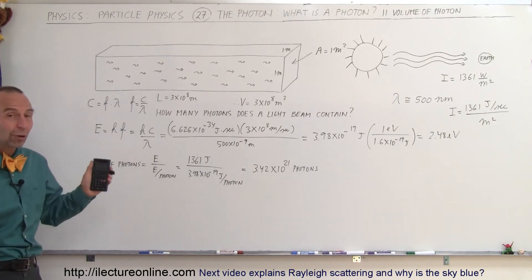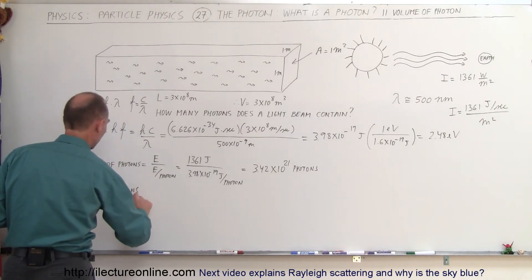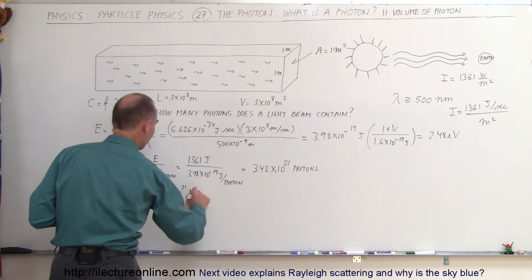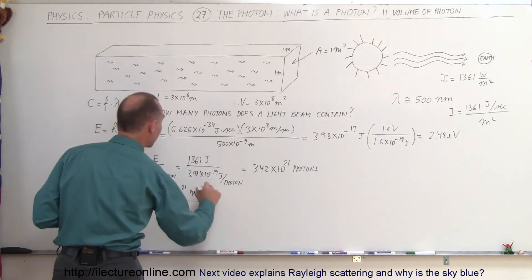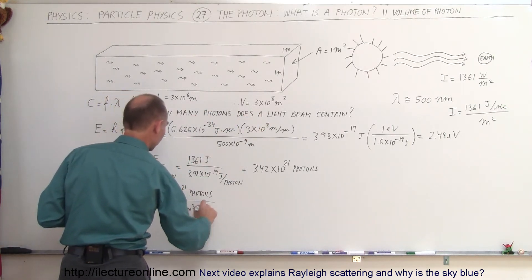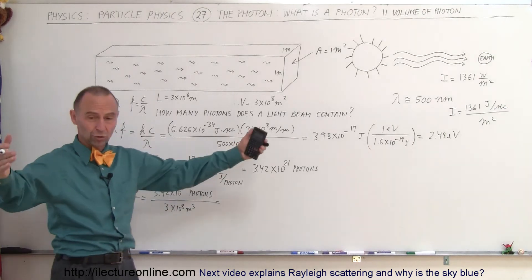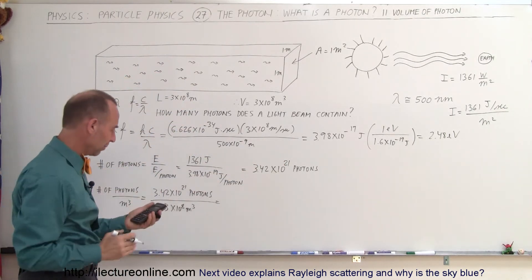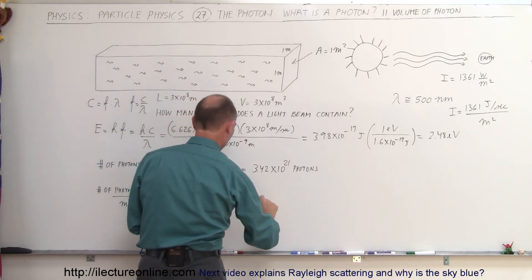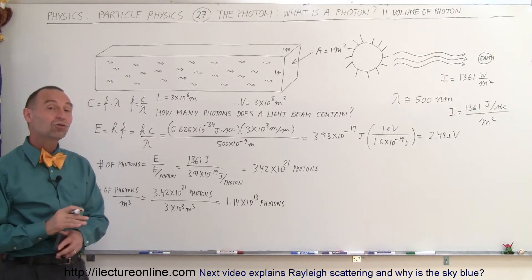So let's go ahead and try to find out the number of photons per cubic meter. Number of photons per cubic meter. We take the total number of photons, which is 3.42 times 10 to the 21 photons. And we divide it by the total number of cubic meters in the beam. And that was going to be equal to the volume, 3 times 10 to the 8 cubic meters. So we divide that number by 3 e to the 8. That gives us the number of photons at every cubic meter. So a cubic meter is about this big. It's a box, 1 meter by 1 meter by 1 meter. And that would contain 1.14 times 10 to the 13th photons. So every cubic meter of sunlight, when it strikes the Earth, contains about 11 trillion photons.